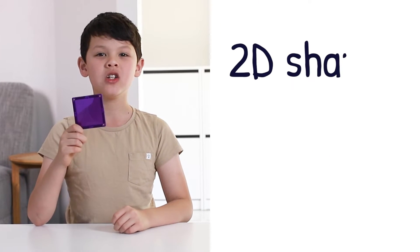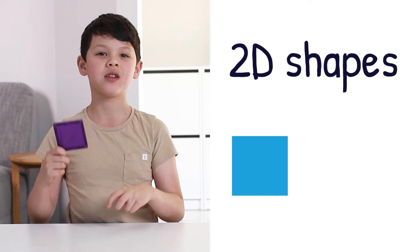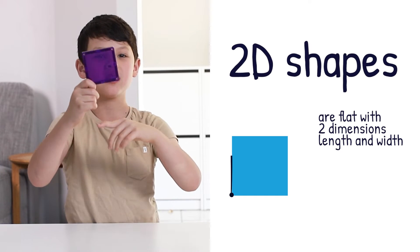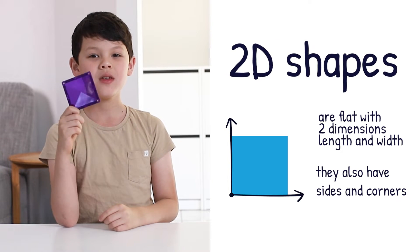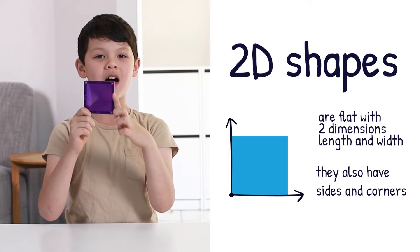This is a square. It's a 2D shape that means it's flat and only has two dimensions, length and width. It also has corners and sides.